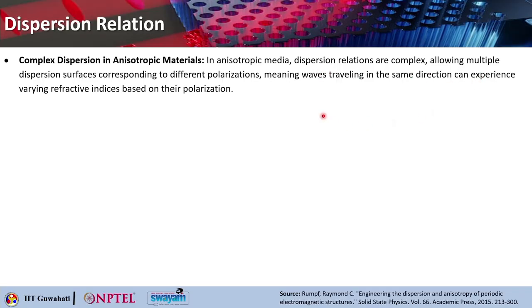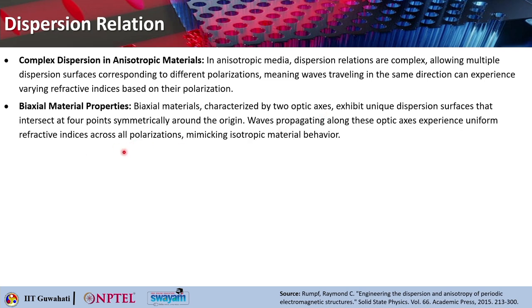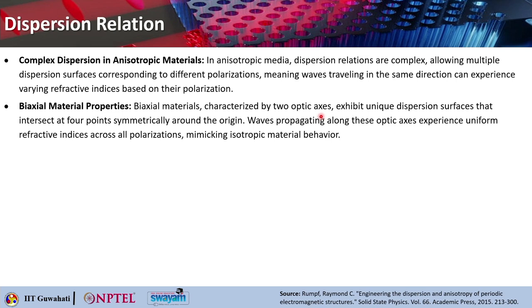In anisotropic media, the dispersion relation becomes more complex because multiple dispersion surfaces correspond to different polarizations. Waves traveling in the same direction may experience different refractive indices based on their polarization. Biaxial materials have different refractive indices in all directions and are characterized by two optic axes. Their dispersion surfaces intersect at four points symmetrically around the origin, making them biaxial.